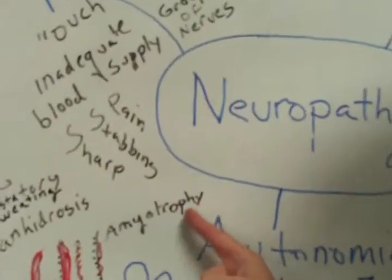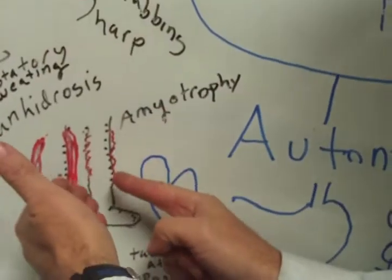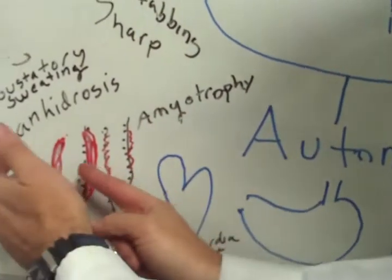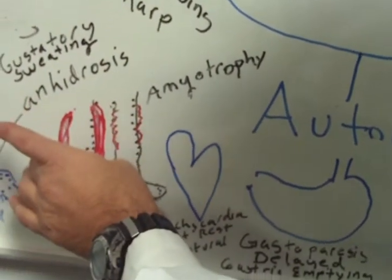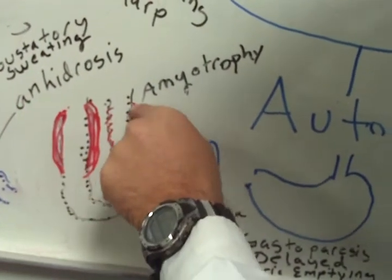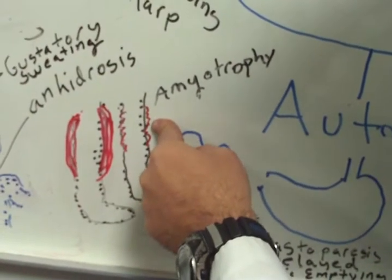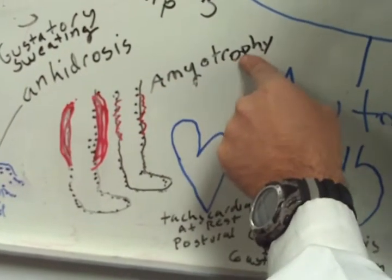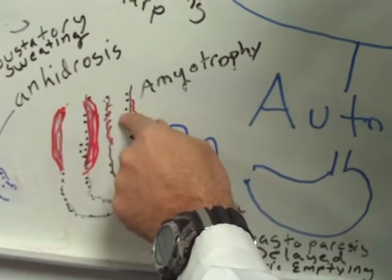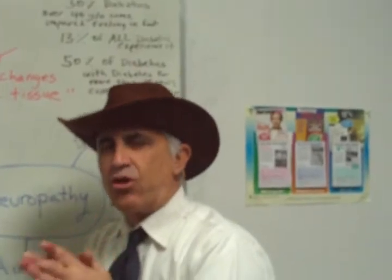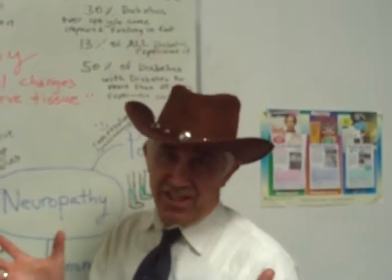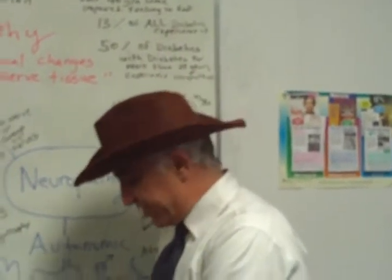Next, we have amyotrophy, which basically means weakening of the muscles. This usually affects the thighs and the buttocks. Here we see a normal muscle in size and here we see a muscle that's atrophied — that's what happens in amyotrophy. After atrophy, the muscles tend to have involuntary twitches called fasciculations, and it's been reported that you can even see them occurring in the thighs.